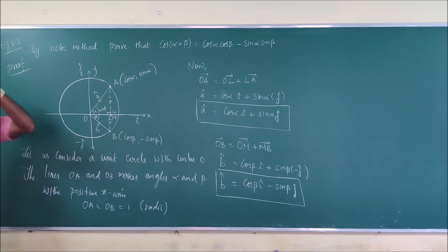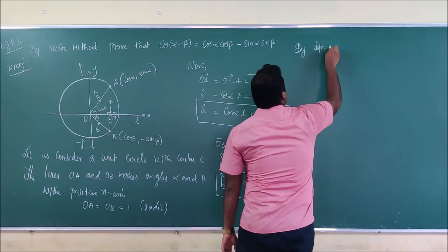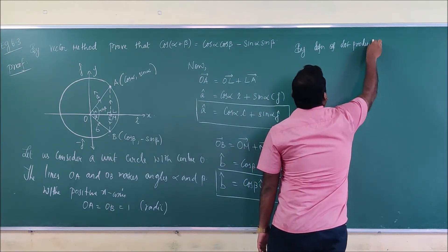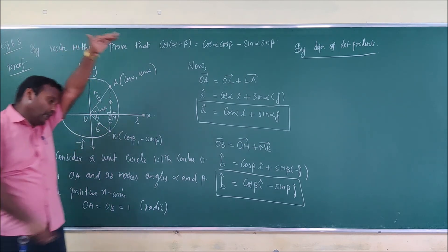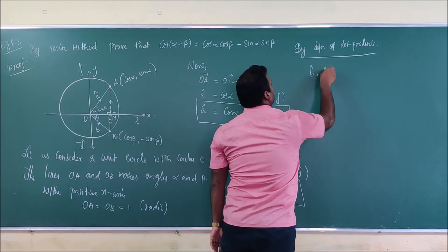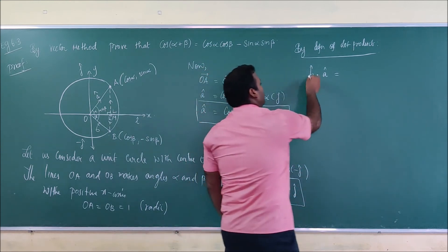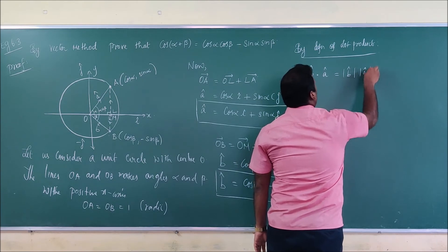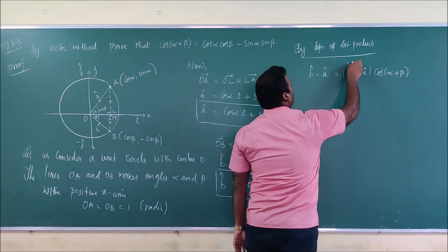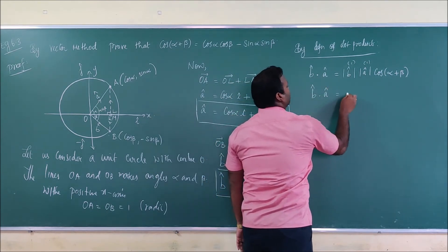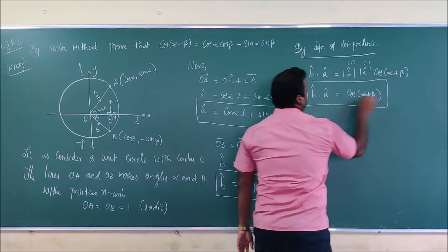Now we take the dot product of the two unit vectors A-cap and B-cap. By the definition of dot product, B-cap · A-cap equals |B-cap| · |A-cap| · cos(angle between them). The angle between OA and OB is α + β. Since both are unit vectors, their moduli are 1, so B-cap · A-cap = cos(α + β). This is equation 1.